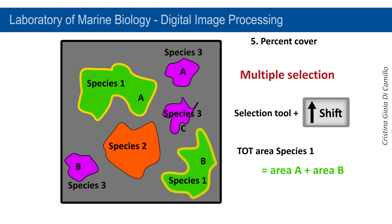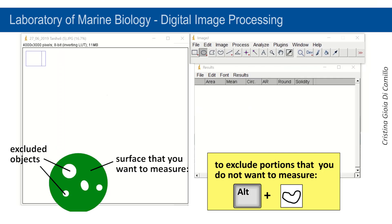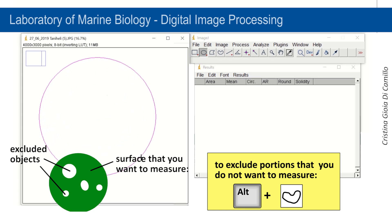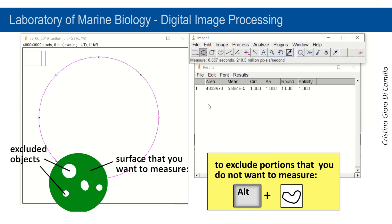Multiple selection in ImageJ is obtained by clicking Shift while selecting more than one object. On the contrary, if you want to exclude objects inside a surface, you have to Alt-click while using the Area Selection tool.